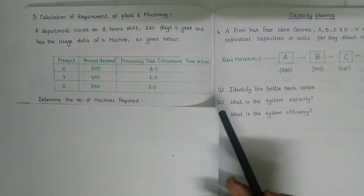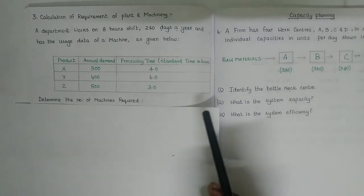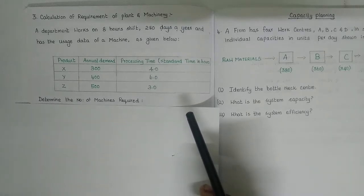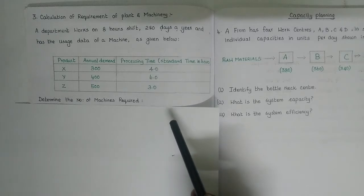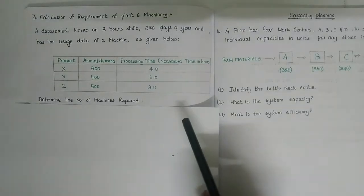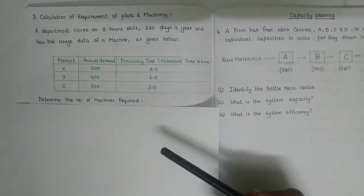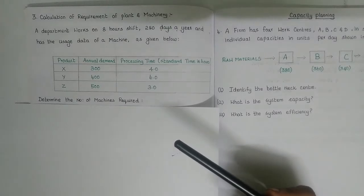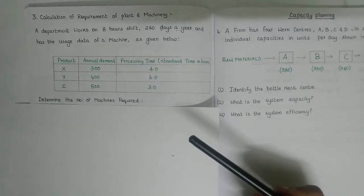For example, capacity planning applies to extension of existing operations, modification to a product line, or starting a new product. The theoretical part will be on my next video as a PPT presentation. Today's video is about numericals based on capacity planning. In general terms, capacity is considered as an ability to store or produce output.